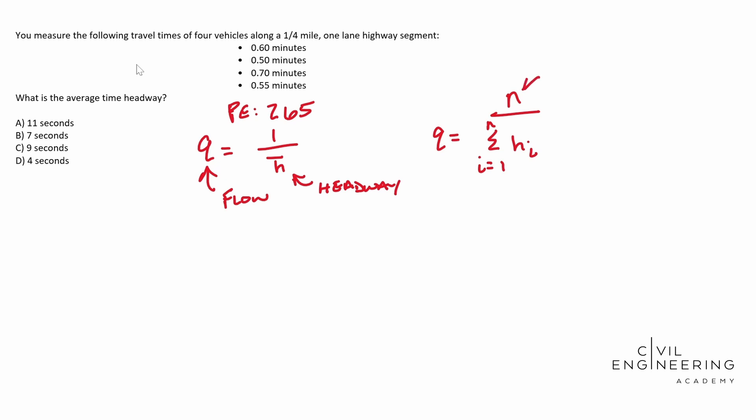And so this guy is going to be your number of time headways and this guy is going to be your individual headways. We don't know our headways, right? So this one is not applicable for us. So we need to try another formula.